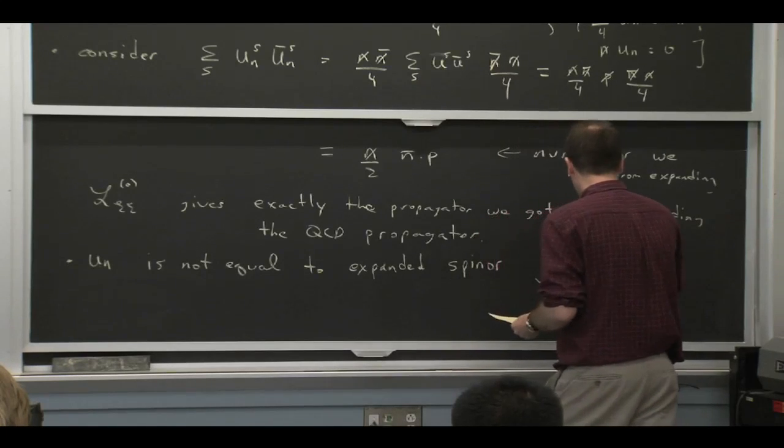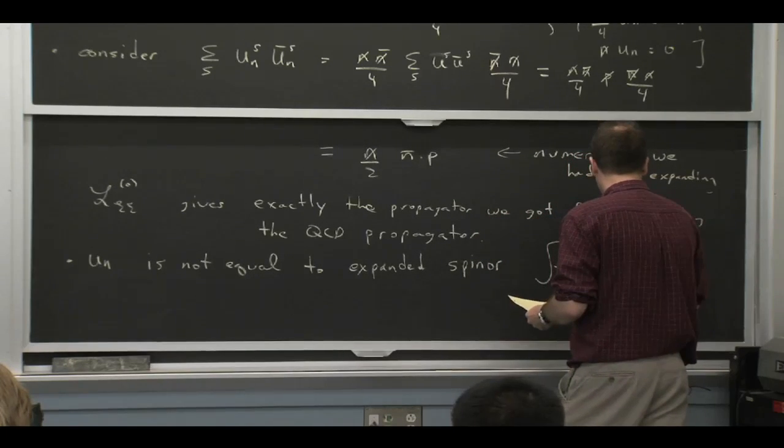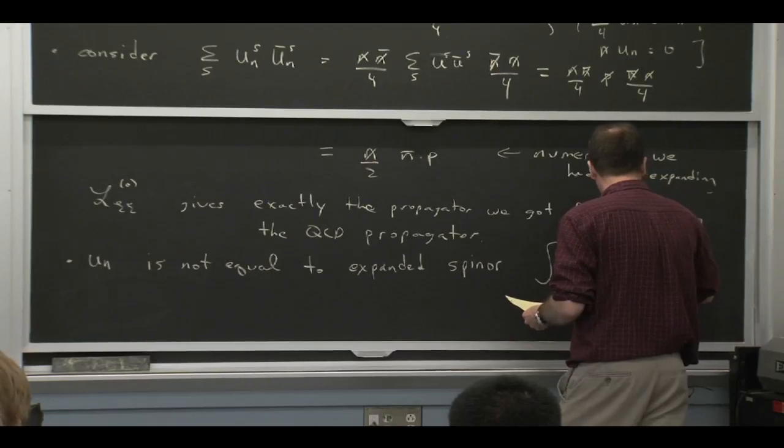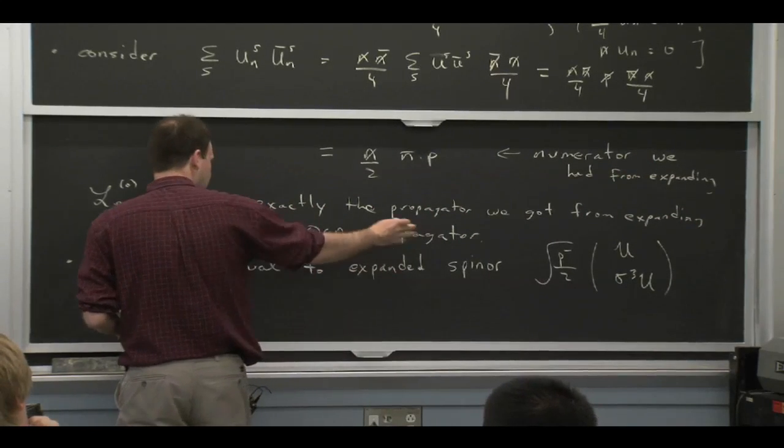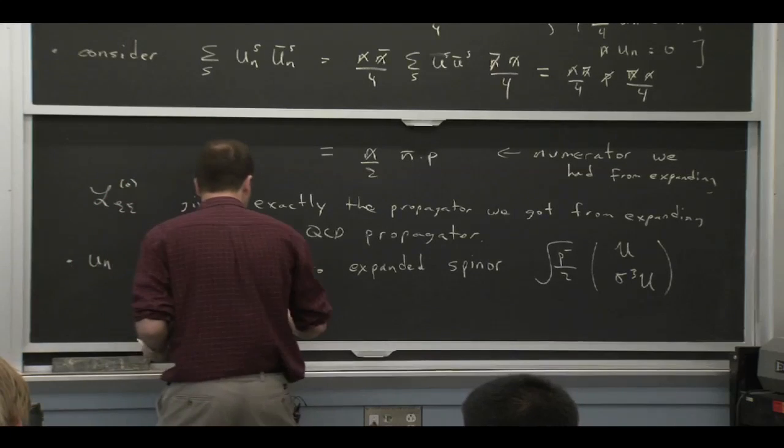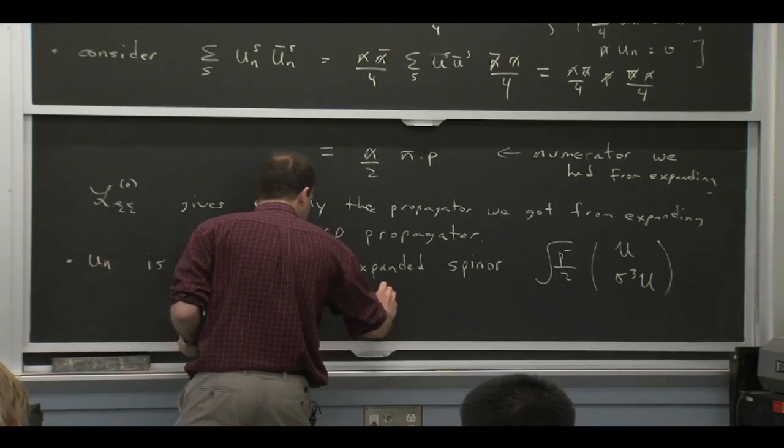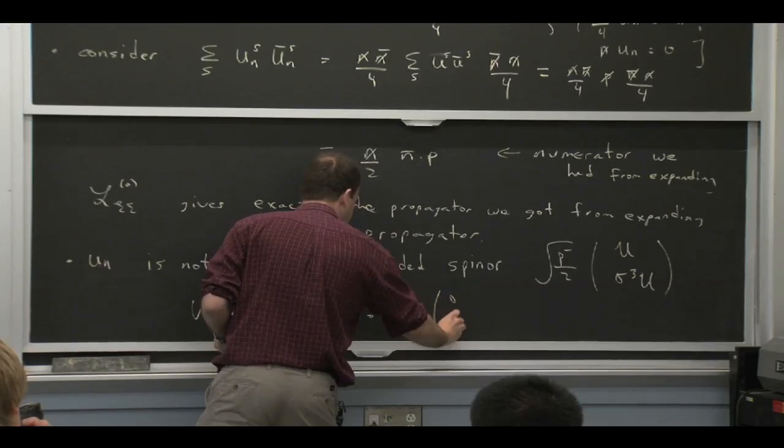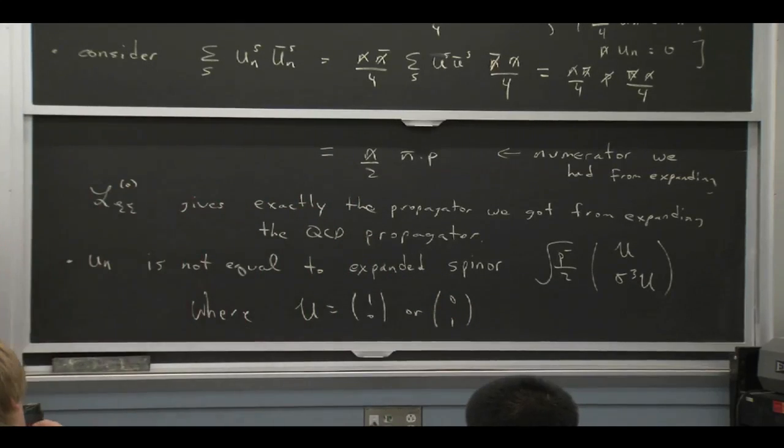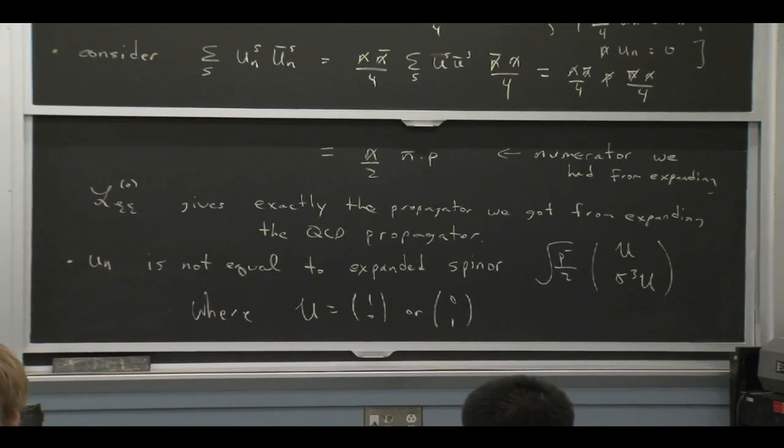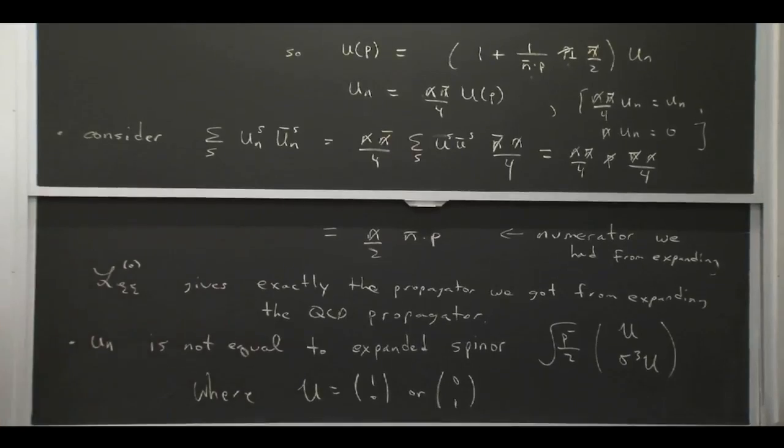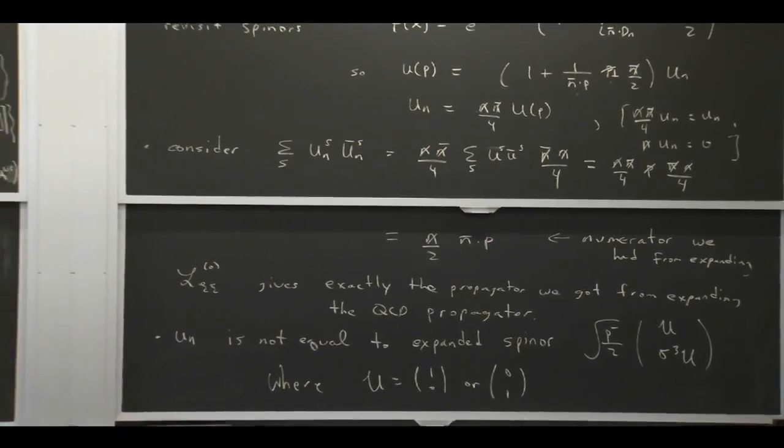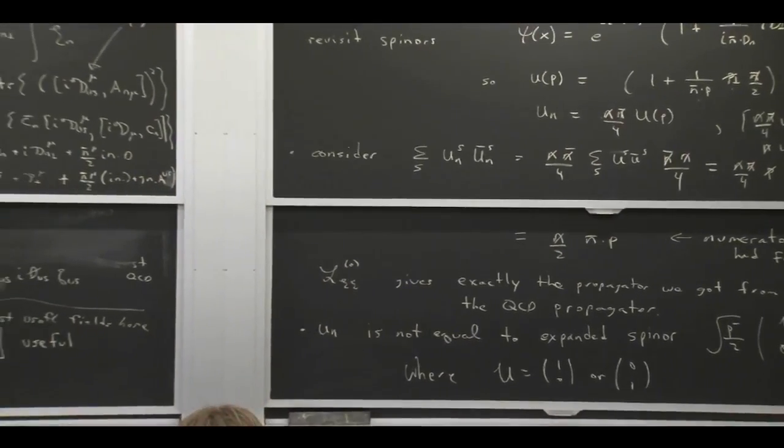So this guy is actually not equal to our expanded spinner, which, putting in some normalization, I could write like this. This is what we got by expanding something like this, which is very simple, where this u is equal to 1, 0, or 0, 1, in the Dirac representation. But that's actually not what we get if we just take the formula up here and use this.